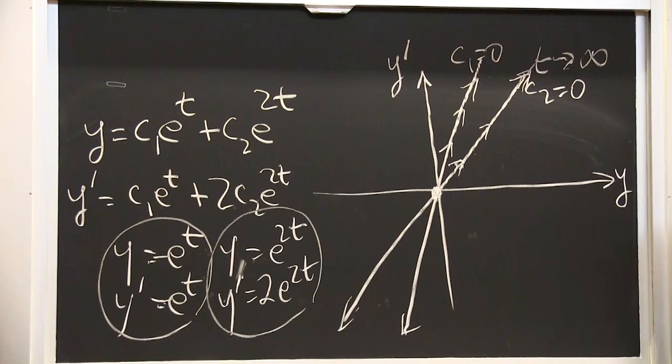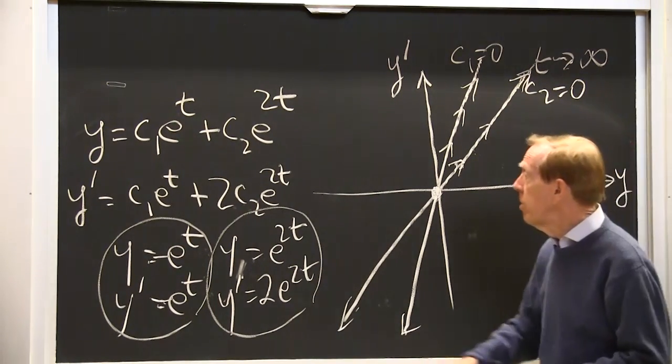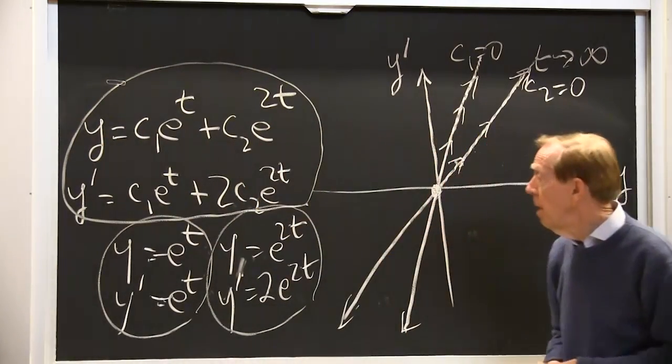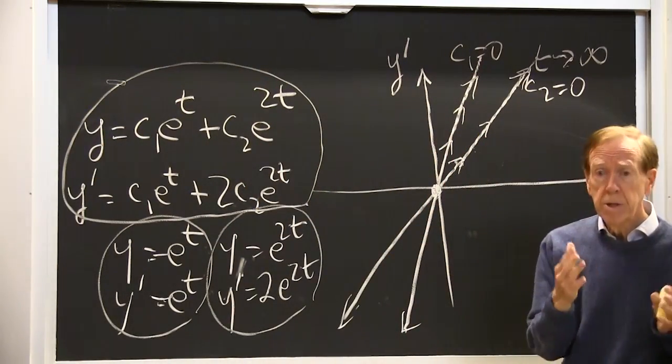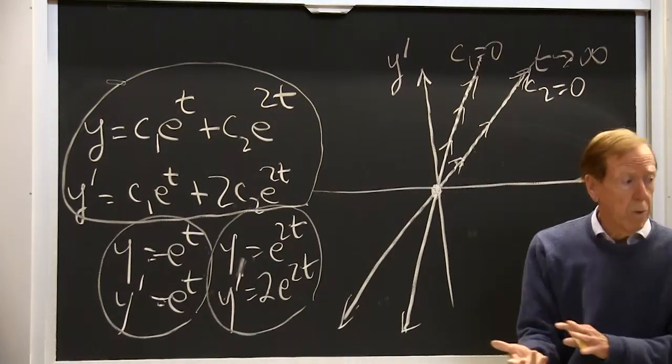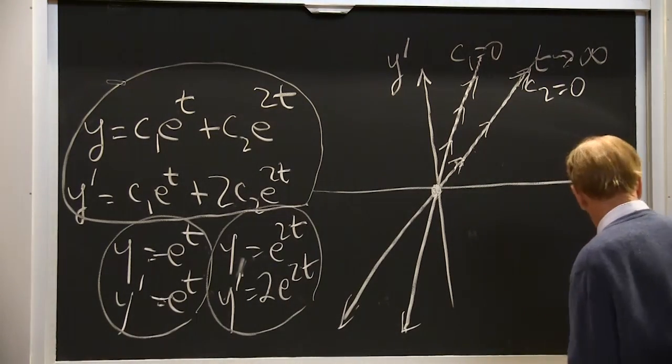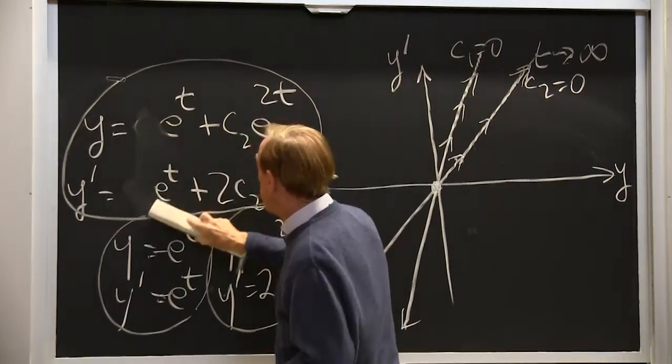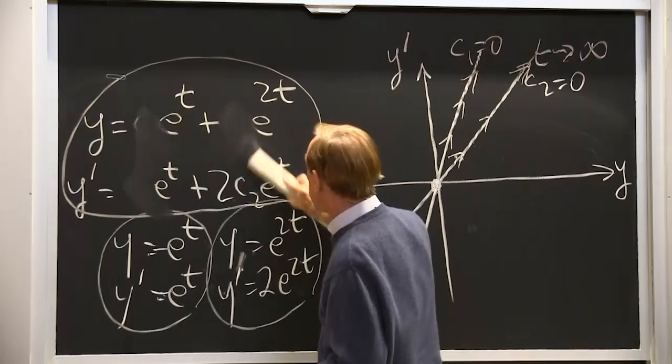So that is two lines, the two special lines in the phase plane. But now I have to draw all the other curves. And they will be curves. And where will they come from? They will come from a combination. Let me take the case c1 equal 1, c2 equal 1. I can erase c1, I can erase c2.